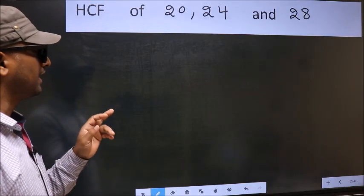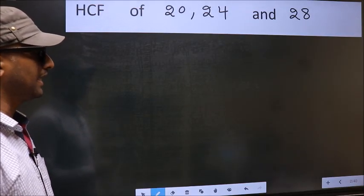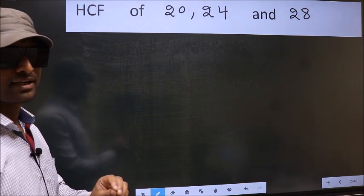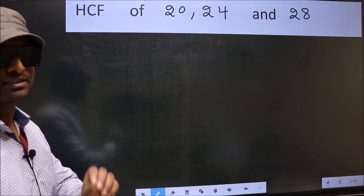HCF of 20, 24, and 28. To find the HCF, first we should do the prime factorization of each number separately.